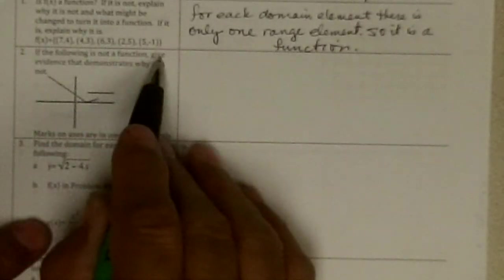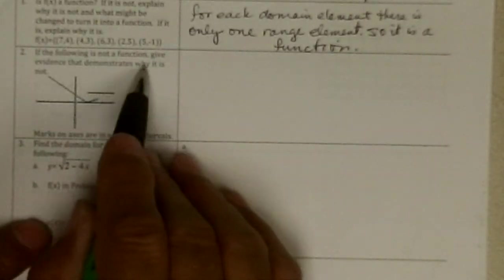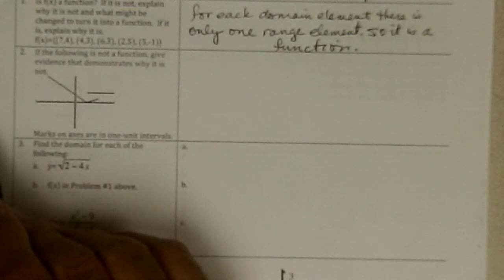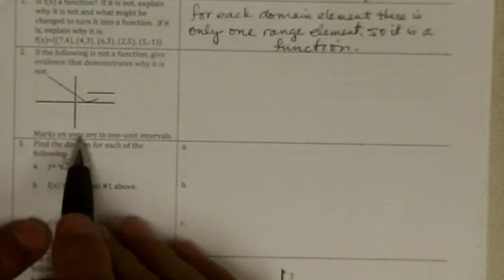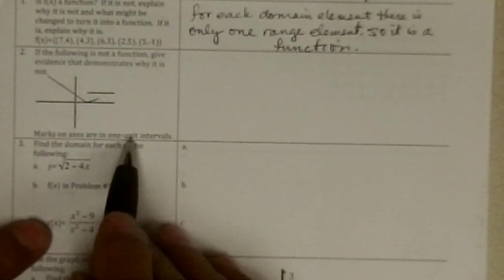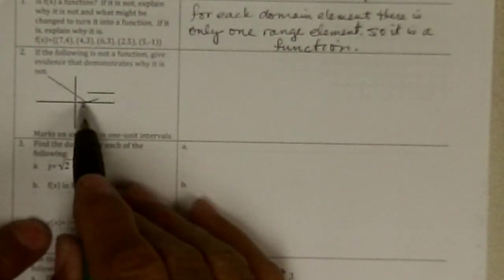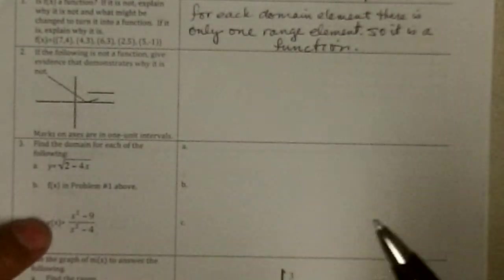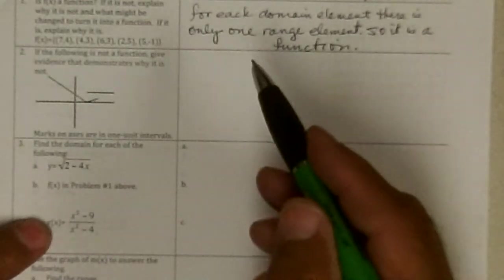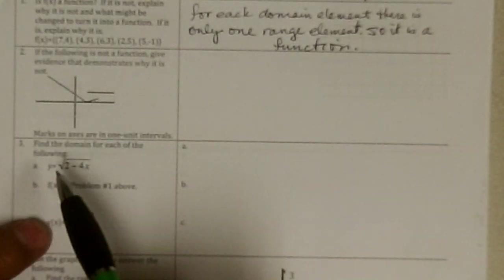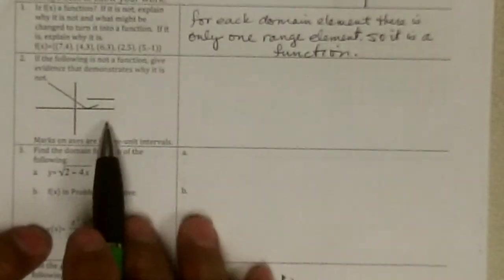Two, if the following is not a function, give evidence that demonstrates why it is not. Mark on the axis are 1 unit intervals. So 1, 2, 3, that's pretty small for you to see on the video. But, a graph, or any kind of case, there can only be, for every x, there can only be one y.